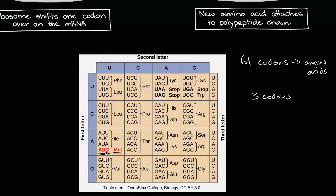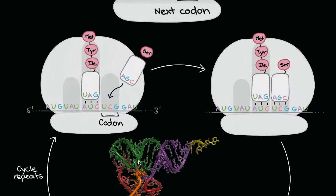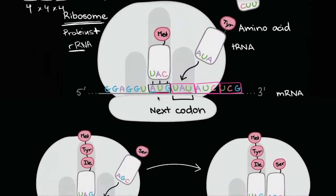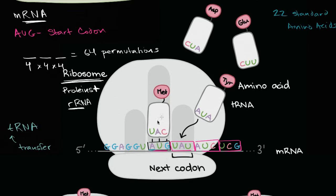AUG is the start codon and it codes for methionine, so polypeptide chains are going to start with methionine. These stop codons tell it where to stop. But how does the amino acid actually get tied up to form the polypeptide, and how do they get matched up with the appropriate codon? That's where we have another RNA-based actor: tRNA. The T stands for transfer — transfer RNA. There are a bunch of different tRNAs that each can bind to specific amino acids, and on parts of those tRNAs they have what are called anticodons that pair with the appropriate codon.